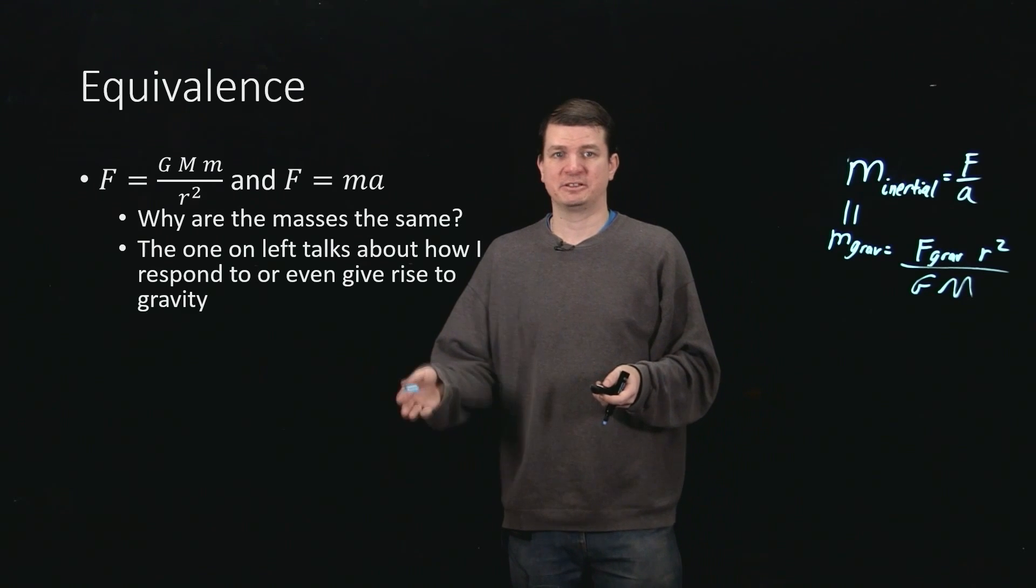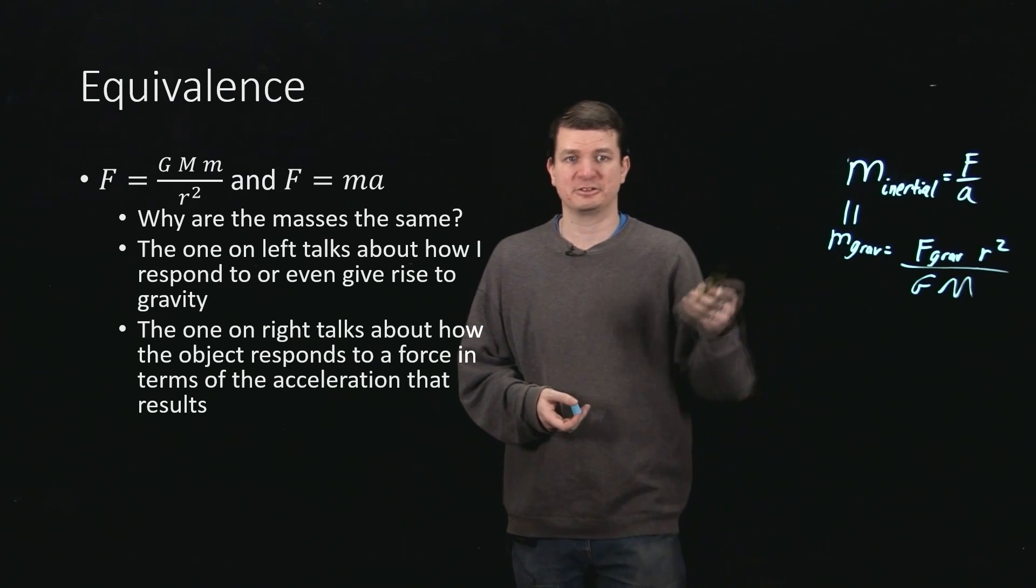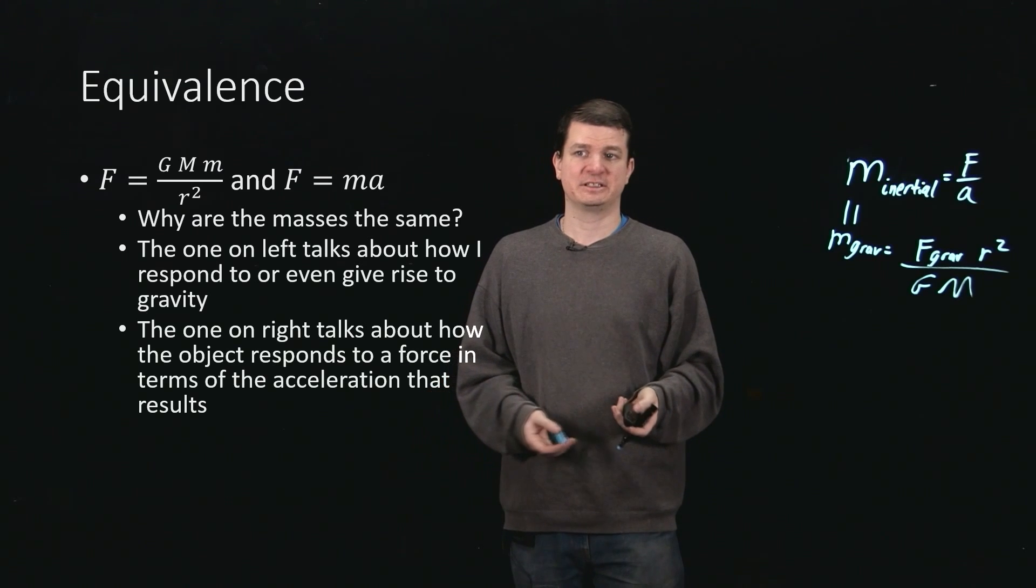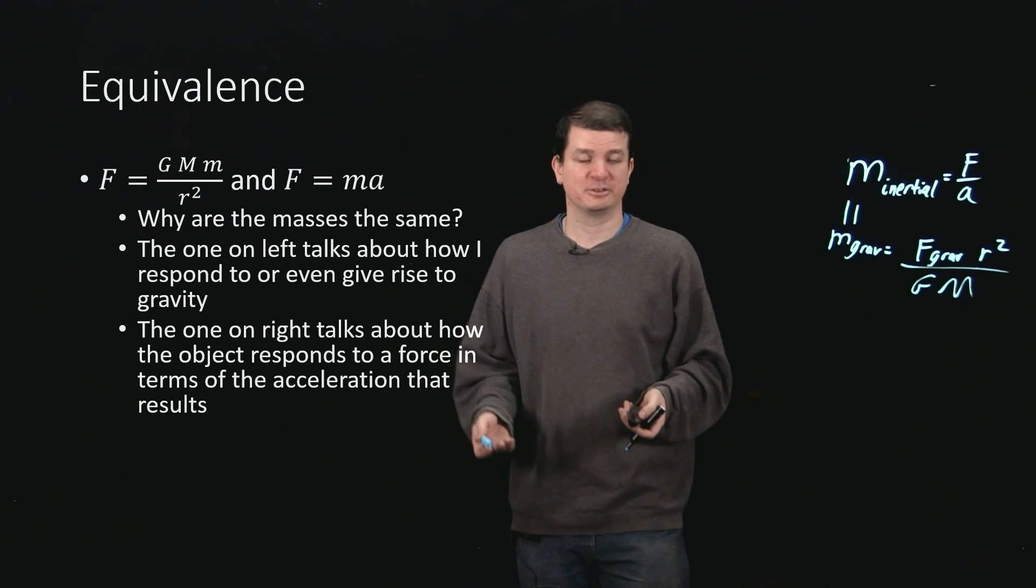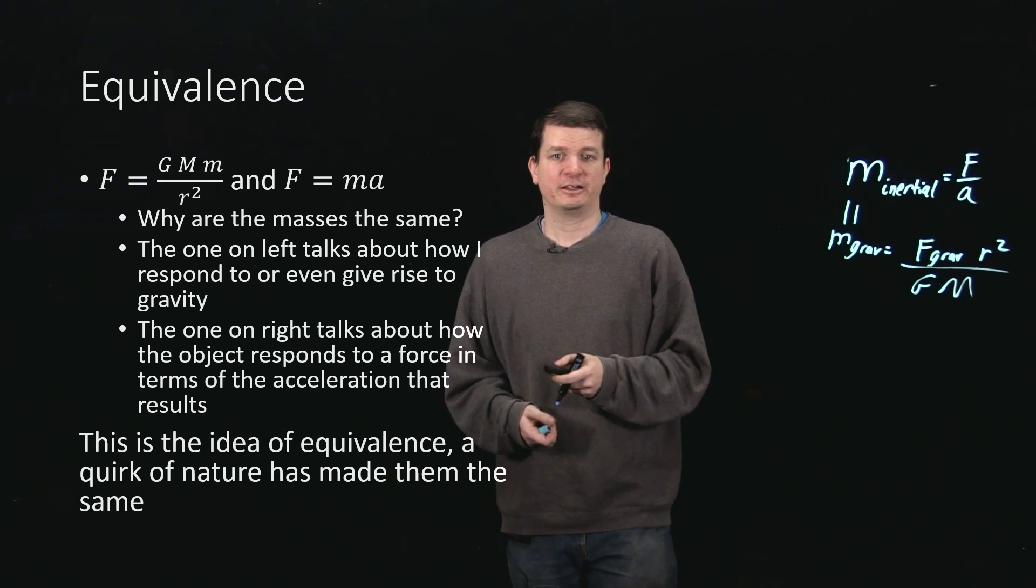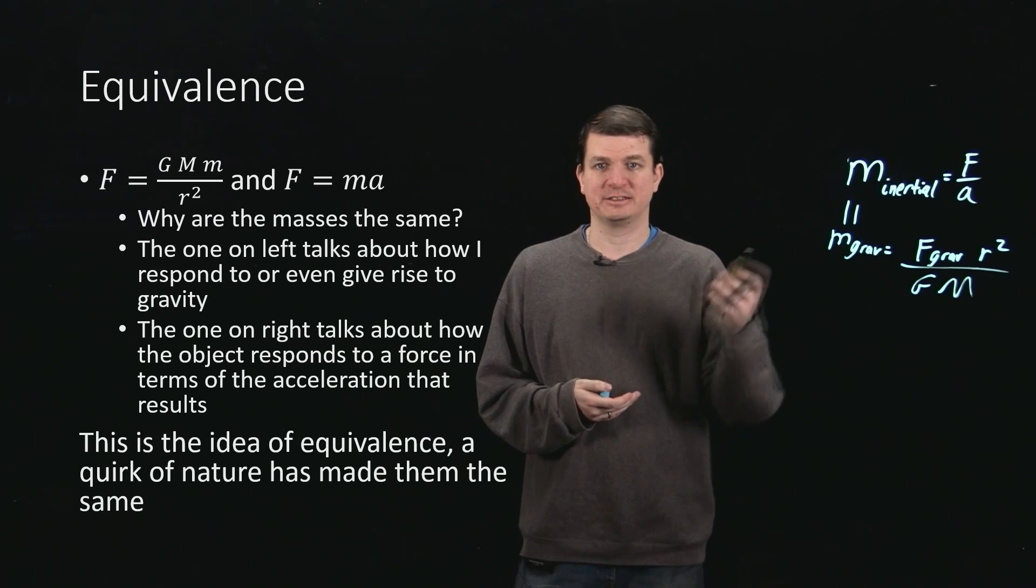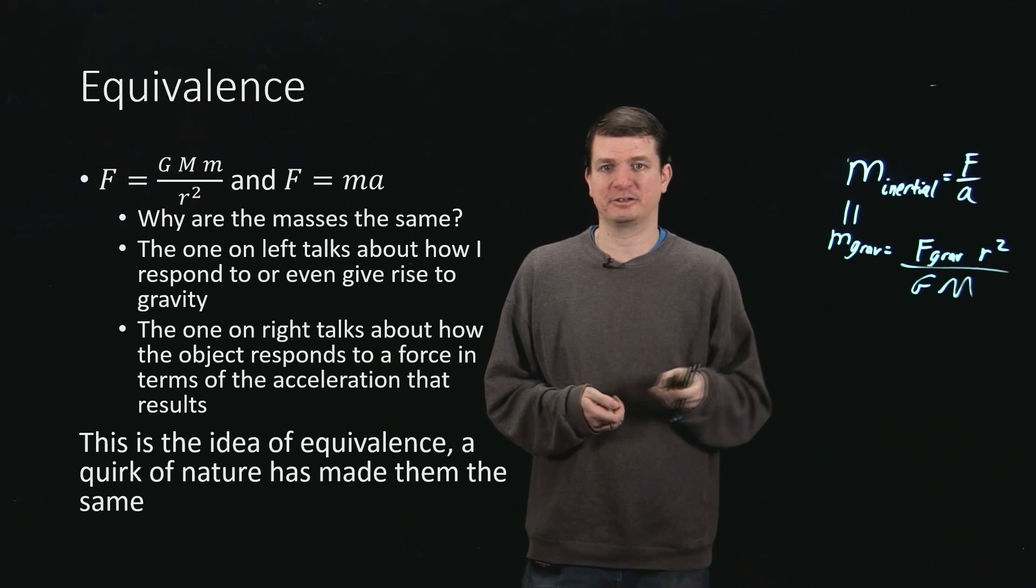So as I say, the one on the left talks about how I respond or give rise to gravity, while the one on the right is this inertial mass talking about responses to force in terms of the acceleration that that force results in. This strange quirk of nature is equivalence. It's the equivalence of the inertial mass and the gravitational mass.